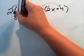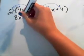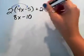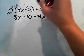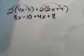So 2 times 4x gives me 8x. 2 times negative 5 is negative 10. 2 times 2x is 4x. And 2 times 4 is 8.